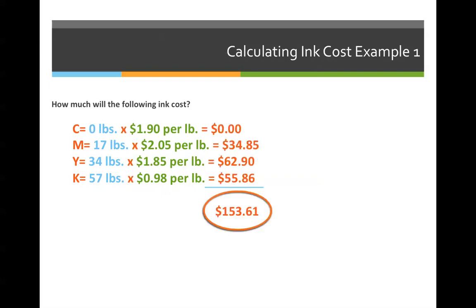Let's go through the answer. You should have gotten, we need $0 to buy cyan because we're not purchasing any cyan ink. Magenta will cost us $34.85, yellow will cost us $62.90, and black will cost $55.86. If I was asking for the total for all of the inks, the total price would be $153.61.